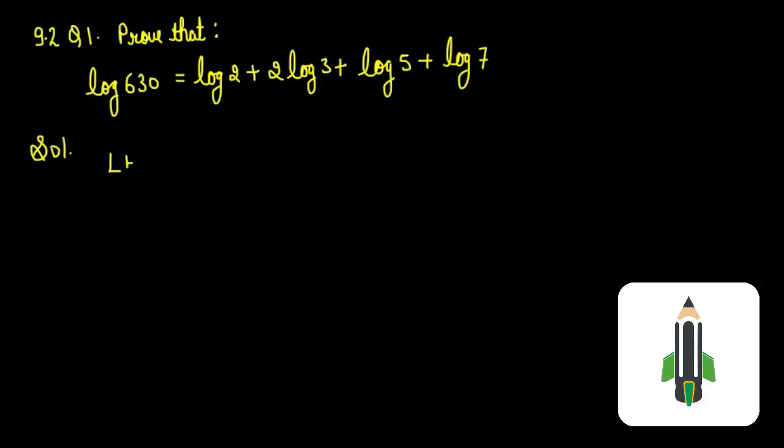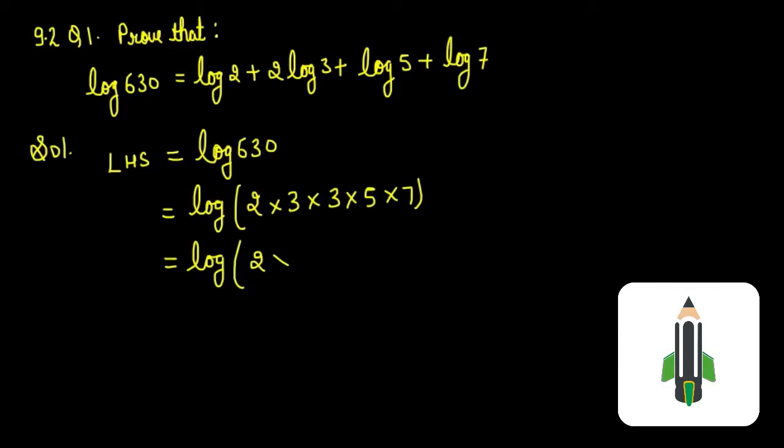To solve this, taking left hand side is equal to log 630. 630 can be written as log 2 × 3 × 3 × 5 × 7, and this can be written as log (2 × 3² × 5 × 7).